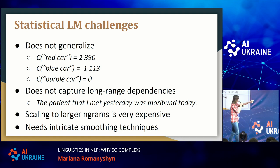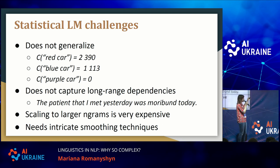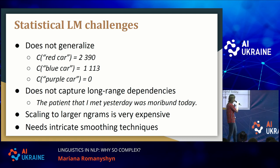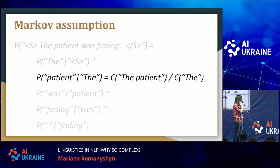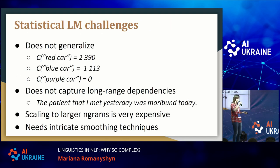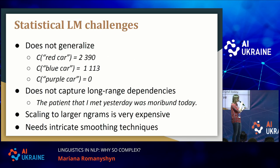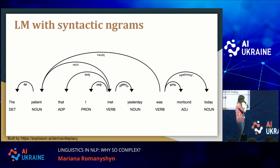Statistical language models also don't capture long-range dependencies well. For example, "the patient that I met yesterday was moribund" — if you have a relative clause in the middle, you may end up with very low probability. It's also difficult to scale to larger n-grams; usually we use a window of five maximum for calculating these probabilities.